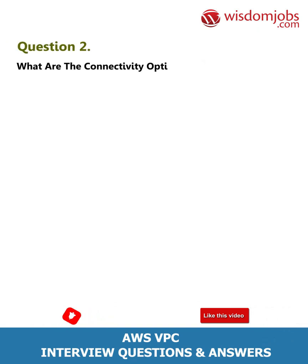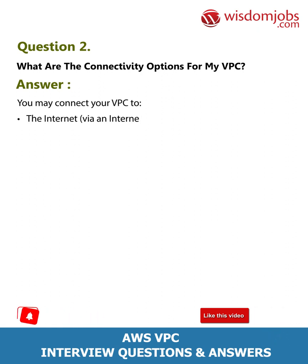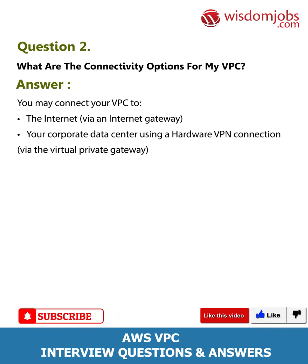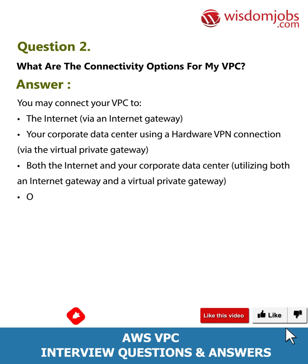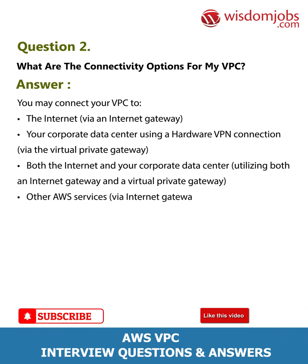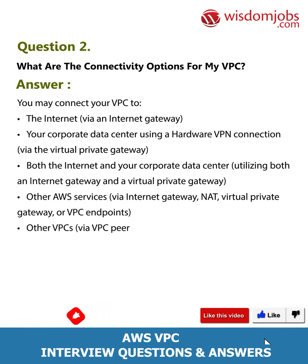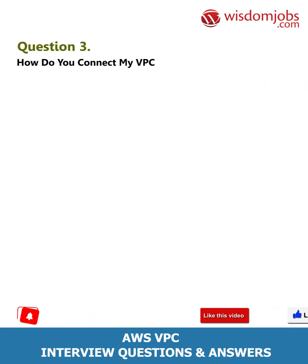Question 2: What are the connectivity options for my VPC? Answer: You may connect your VPC to the internet via an internet gateway; your corporate data center using a hardware VPN connection via the virtual private gateway; both the internet and your corporate data center utilizing both an internet gateway and a virtual private gateway; other AWS services via internet gateway, NAT, virtual private gateway, or VPC endpoints; and other VPCs via VPC peering connections.